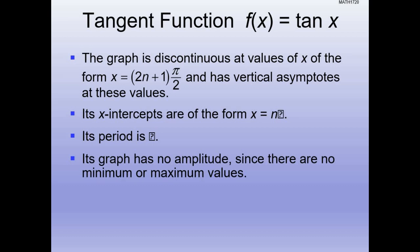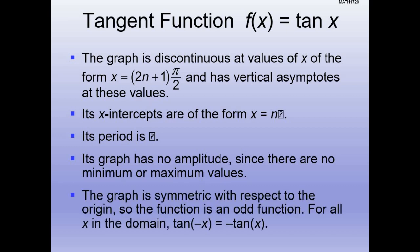There is no maximum value on tangent because the range is from negative infinity to positive infinity. It's symmetric with respect to the origin, so we consider tangent an odd function. If I fold the top part of tangent over the y-axis and over the x-axis, it laps on top of itself. So tangent is odd: if I have tangent of negative x, I get back negative tangent of x.